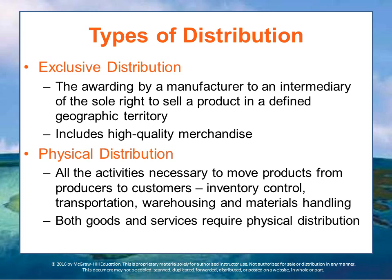Physical distribution includes all activities necessary to move products from producers to consumers — inventory control, transportation, warehousing, and materials handling. Physical distribution creates time and place utility by making products available when they are wanted, where they are wanted, and with adequate service at minimum cost. These are different aspects of the distribution system that are part of the market channel, and things you have to choose from when designing your marketing mix.